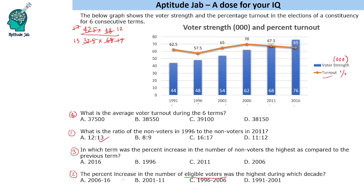Next, the percentage increase in the number of eligible voters was the highest during which decade? For 2006 to 2016: 62 becomes 76, an increase of 14 by 62. For 2001 to 2011: increase of 14 over 54. For 1996 to 2006: increase of 14 over 48. And for 1991 to 2001: increase of 10 over 44.